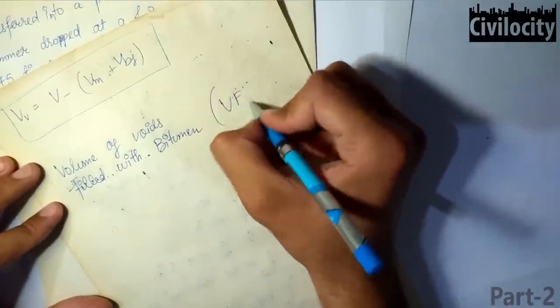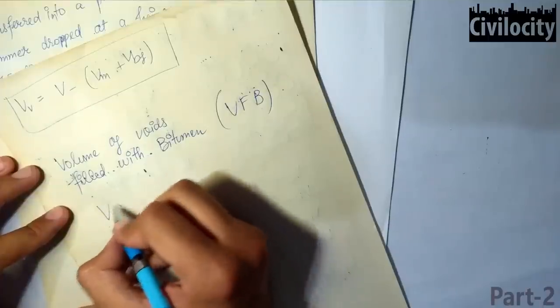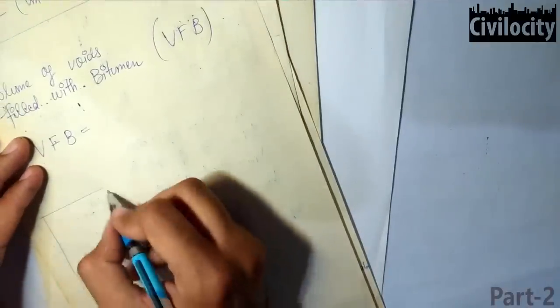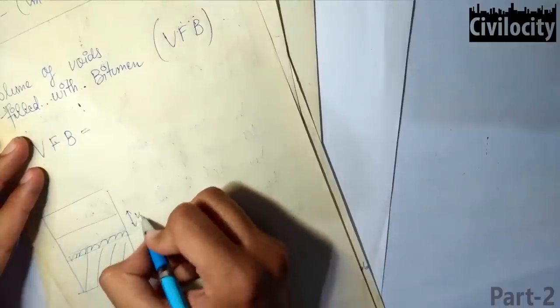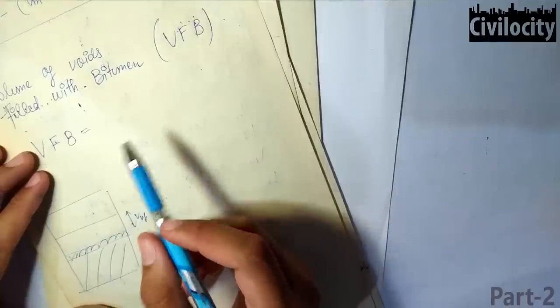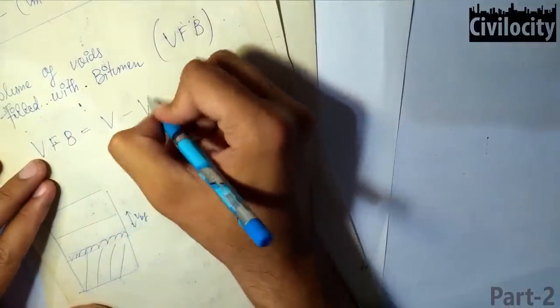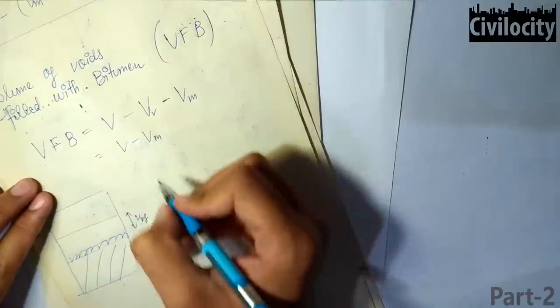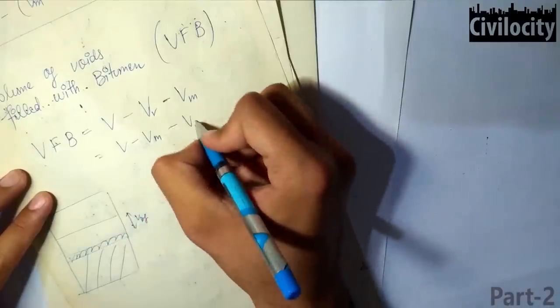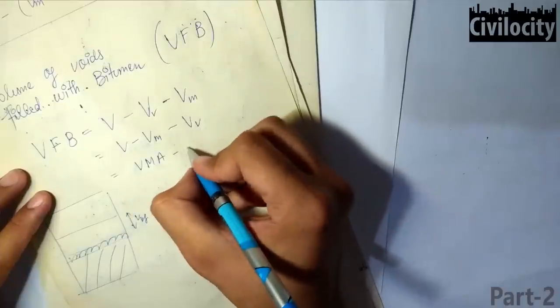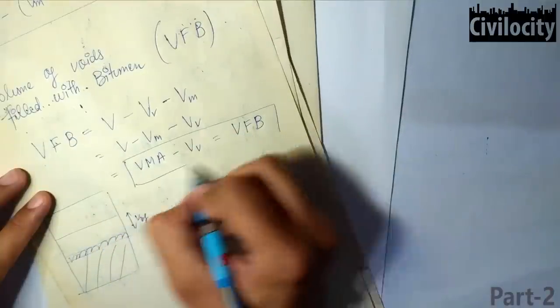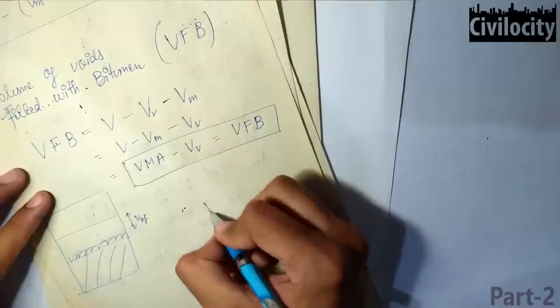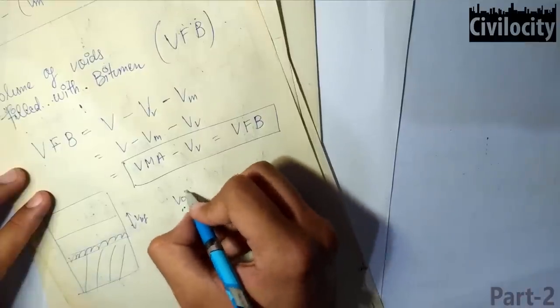To find the volume of voids filled with bitumen, called VFB: from the phase diagram, we have volume of aggregates, total binder volume, volume absorbed by aggregates, and Vfb left. VFB can be written as V minus Vv minus Vm. Since V minus Vm equals VMA, we get VFB equals VMA minus Vv. The voidless volume of the paving mix is denoted by V minus Vv.